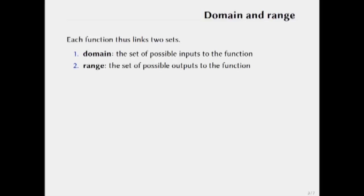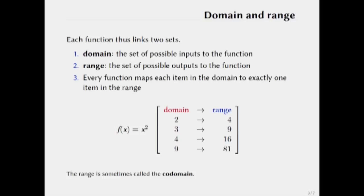The set of possible inputs to the function is called the domain and the set of possible outputs to the function is called the range. And in essence then every function will map each item in the domain to exactly one item in the range.